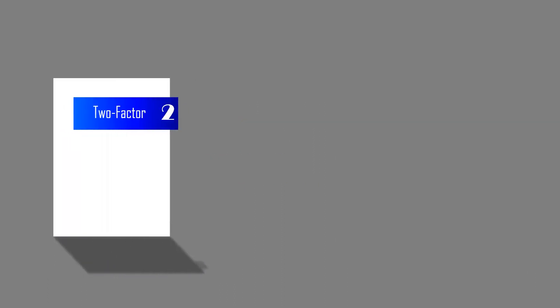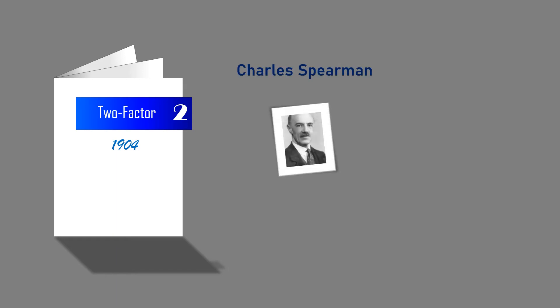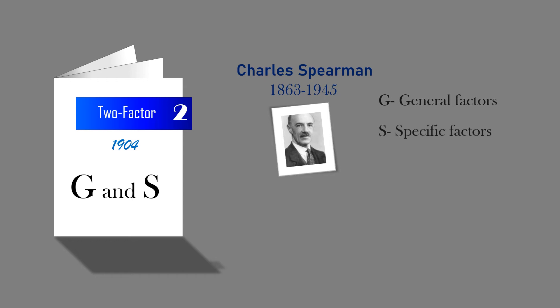Number 2 is Spearman's two-factor theory of intelligence, 1904. Charles Spearman, a British psychologist from 1863 to 1945, advanced the two-factor theory of intelligence, G and S. The performance of any intellectual act requires some combination of G, or general factor, which is available to the same individual to the same degree for all intellectual acts, and of S, or specific factors, which are specific to that act and vary in strength from one act to another.